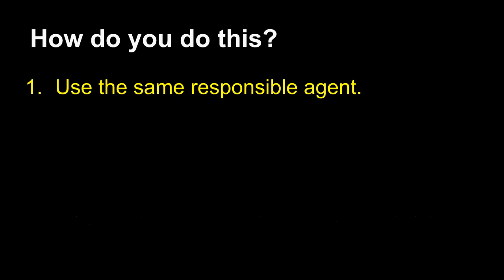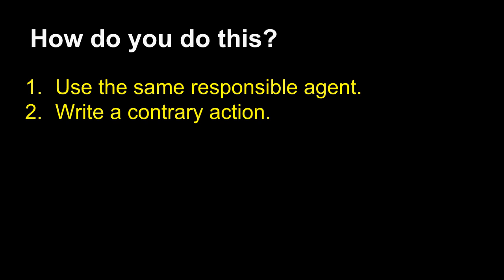So how do I construct the opposing position? I use the same responsible agent. I write a contrary action into my opposing claim. And I find another value for my opposing warrant. If I can do this, then I can construct an opposing position that is intact, clear, and functions logically. I can deal with it in a full-on argument and debate session. If you do this, everything from here on out will be much clearer and easier.